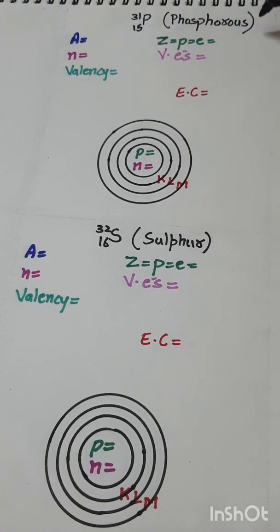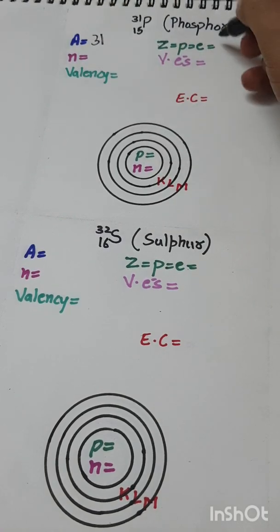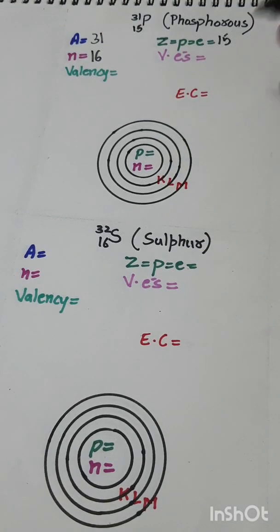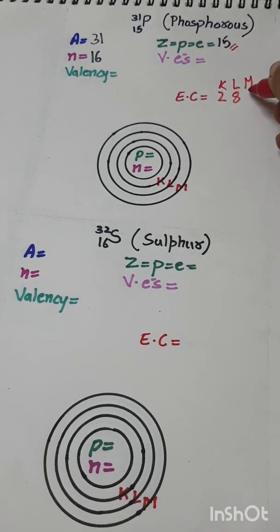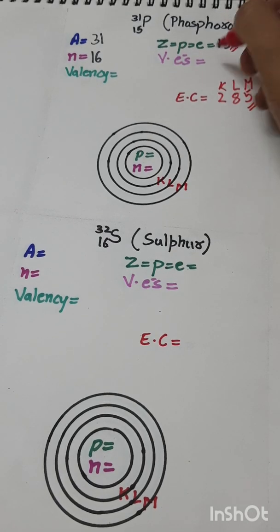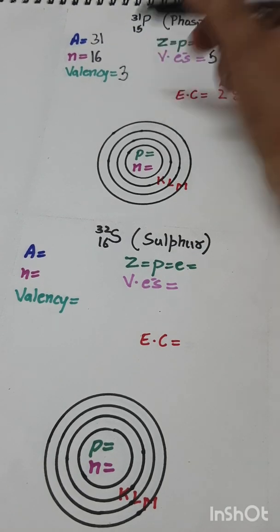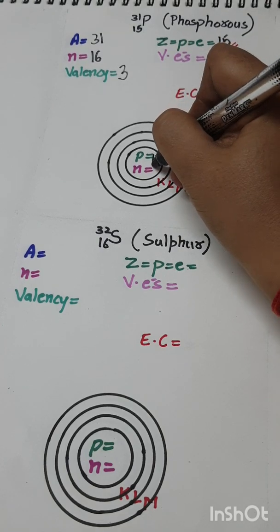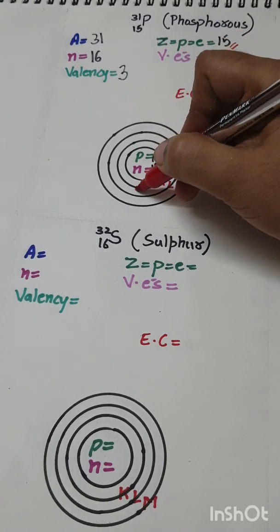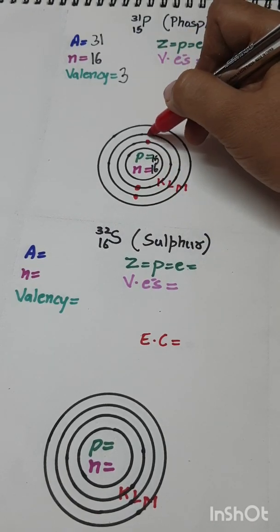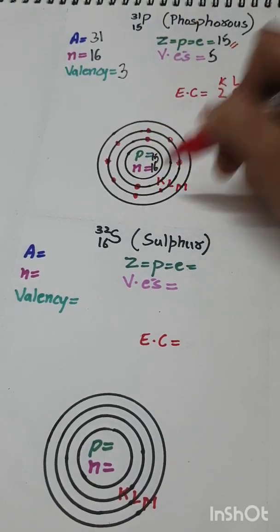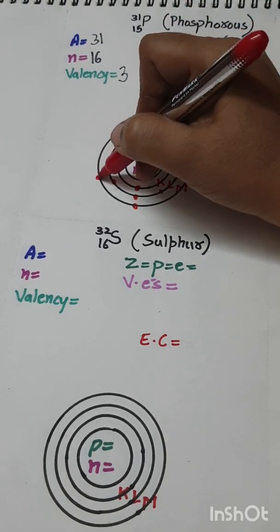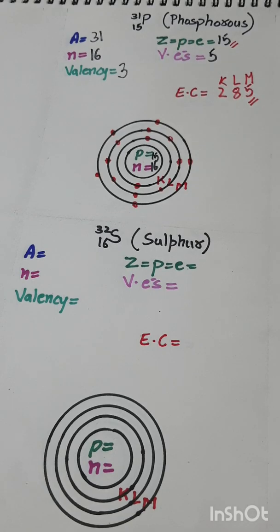Phosphorus: A = 31, Z = 15, n = 31 − 15 = 16. Electronic configuration — K shell: 2, L shell: 8, leaving 5 electrons for the M shell. EC is 2, 8, 5. The M shell has 5 valence electrons, so valency = 8 − 5 = 3. Number of protons = 15, number of neutrons = 16.